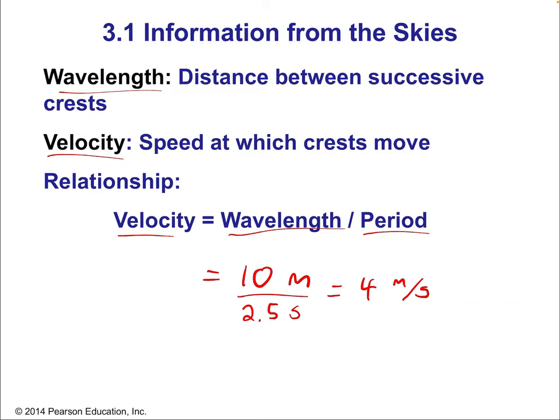Remember, the water isn't traveling that fast — the water is just the medium through which the wave is being transmitted. But the wave itself is traveling four meters per second. A lot of waves will move at constant velocity, though sometimes properties like temperature and density of the medium will change them. In this case, four meters per second is the wave velocity.